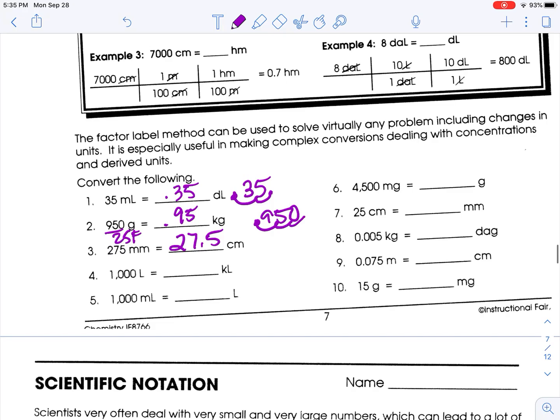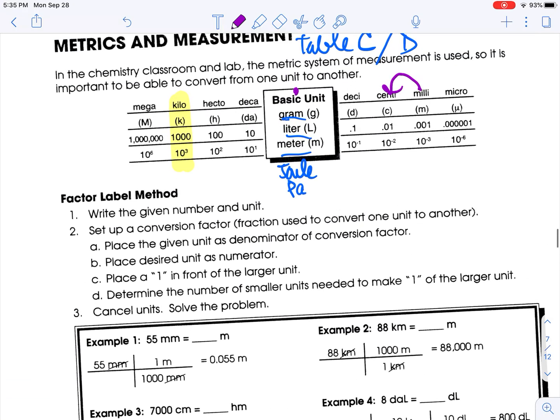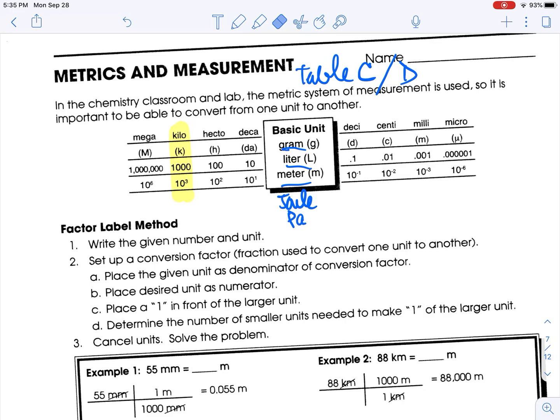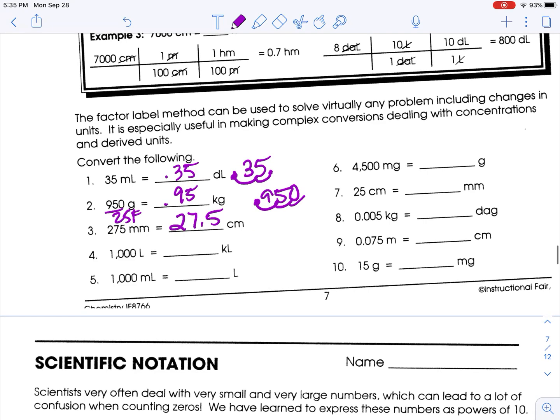Number four is 1,000 liters to kiloliters. So liters to kiloliters. So liters is a base. One, two, three spots to the left. So that would be one kiloliters. Don't include those zeros because those are not significant.